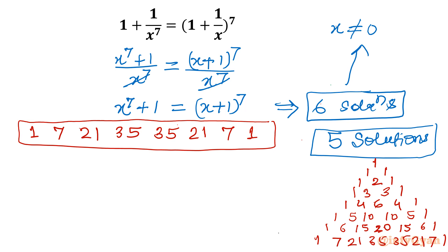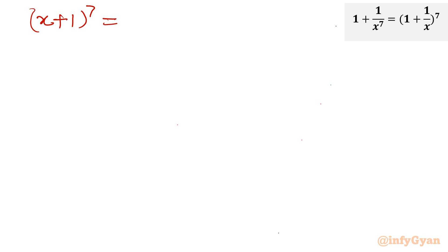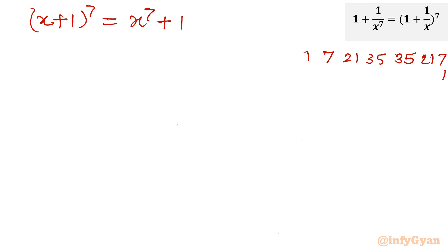Now let me write (x + 1)^7 = x^7 + 1, and expand the left-hand side using those coefficients 1, 7, 21, 35, 35, 21, 7, 1. I will club matching pairs: 7 with 7, 21 with 21, and 35 with 35, so let me expand the LHS. I write x^7, then group like-powered terms.